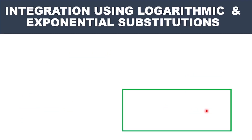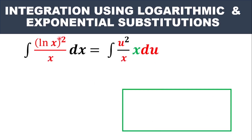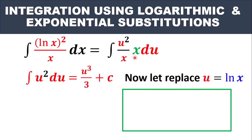Now let's place them into the original question. The original question was the integral of (ln x)² over x. Wherever we see ln x, we put U. So in place of ln x we have U, the square has not changed, and in place of dx we substitute x dU. You can see that the x in the denominator and this x cancel out, leaving us with the integral of U² dU.